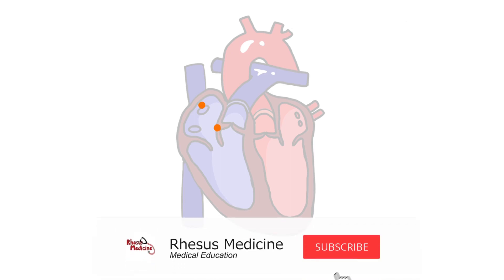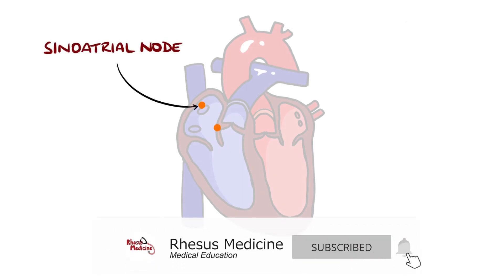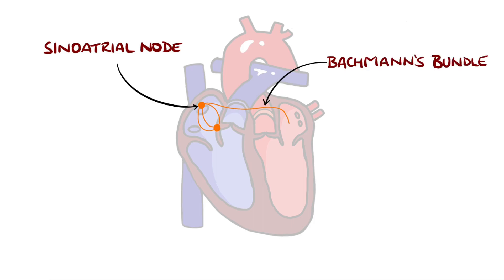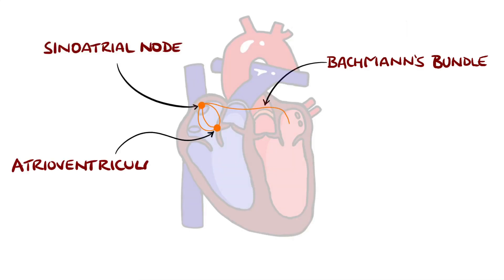In normal hearts, the electrical signalling begins from the sinoatrial node located in the right atrium. From here, the impulse spreads through the atria, reaching over to the left atrium via Backman's bundle, causing the atria to contract. It then reaches the atrioventricular node, or the AV node, where the impulse is held momentarily.